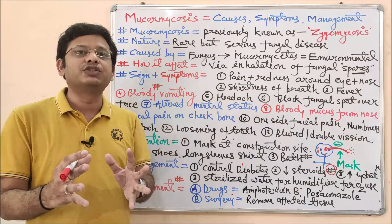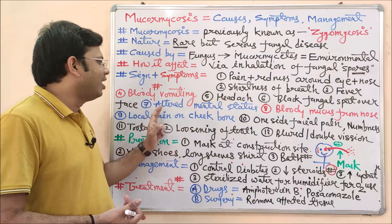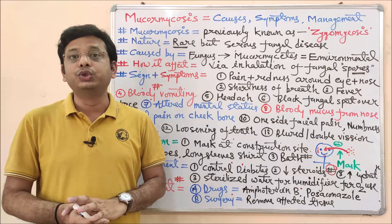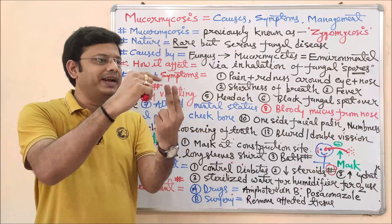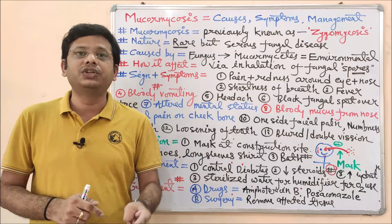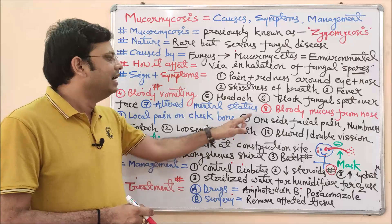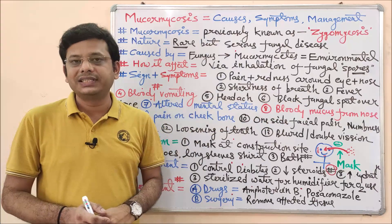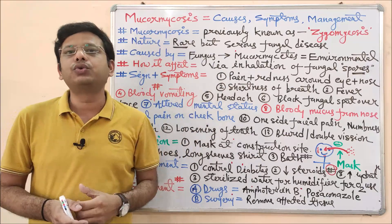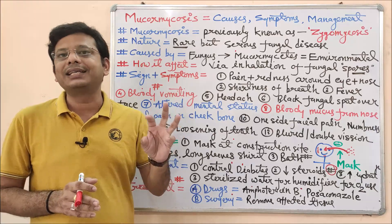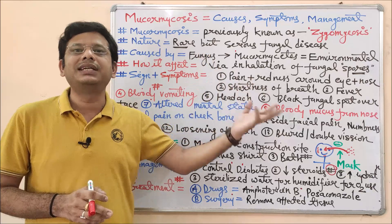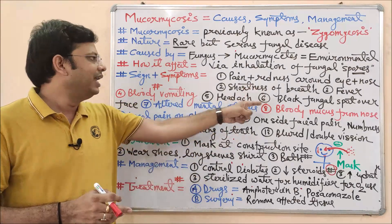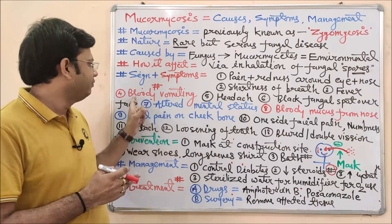Altered mental state is a characteristic symptom — a person with mucormycosis will not be able to make proper judgments or answer questions clearly. Another warning symptom is black fungal spots on the face. Mucormycosis is also known as black fungal disease because the mold causes the formation of black spots. There is also a possibility of blood in vomit.